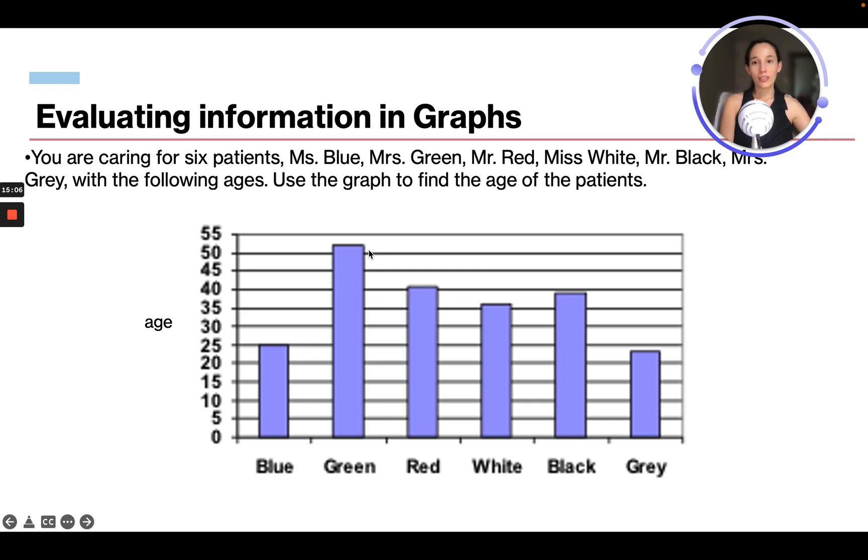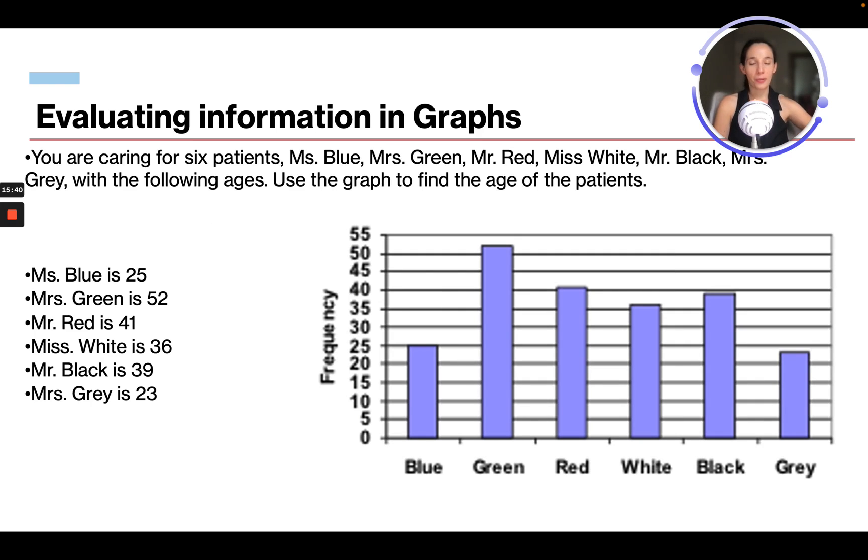Miss Green is 52 years old. Mr. Red is 41. Miss White is 36. Mr. Black is going to be 39, because we can see this line is 40 and it's a little bit below. And Miss Gray is 23. And that is how you would interpret those numbers from a bar graph, and you will most likely see a question like this on the ATITEAS. So those were the answers.